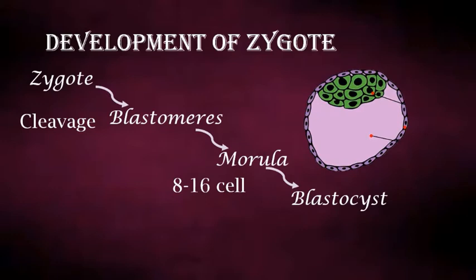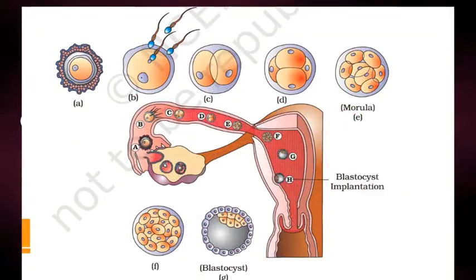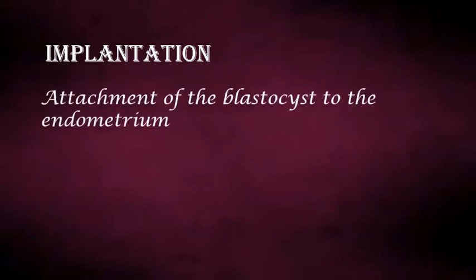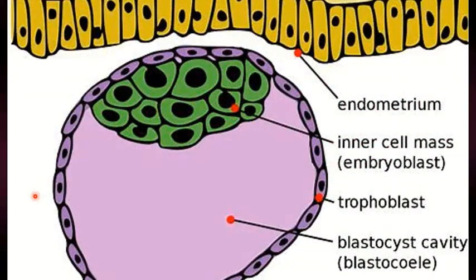As these cleavages are occurring, the structure is also continuously moving towards the uterus where it will be implanted. The blastocyst has a unique structure that helps it become implanted. Implantation is the attachment of the blastocyst to the endometrium. In the blastocyst, two types of cells can be seen: the outer cell layer shown in purple is known as the trophoblast, which helps in implantation, and the inner cell mass known as the embryoblast, which will form the embryo.